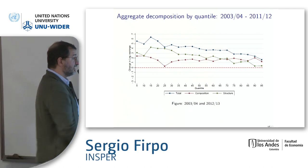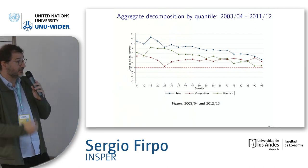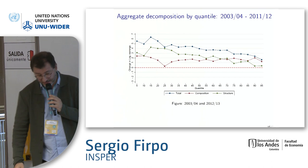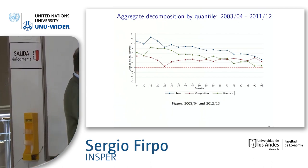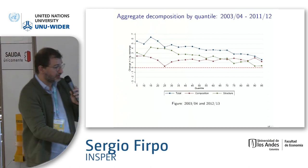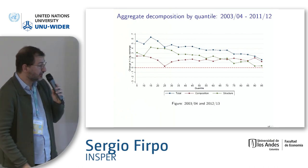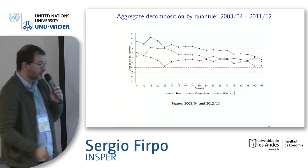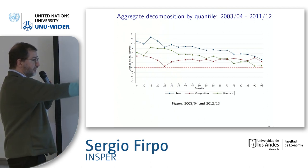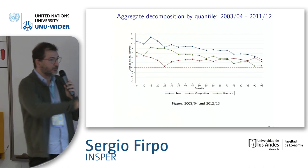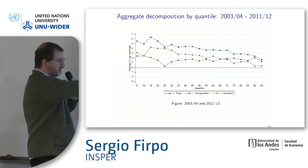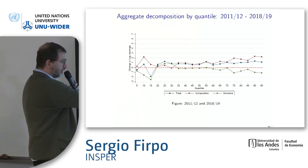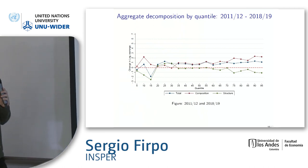When we plot what happened by quantile in terms of log earnings changes — essentially growth incidence curves decomposed using a RIF-based reweighting scheme — the blue line is the actual first sub-period, showing a declining pattern. The structure effect is much more important, especially for the bottom half of the distribution. The composition effect is basically flat but increasing in the upper tail. In the second sub-period there is not much going on, and the composition effect appears inequality-enhancing.